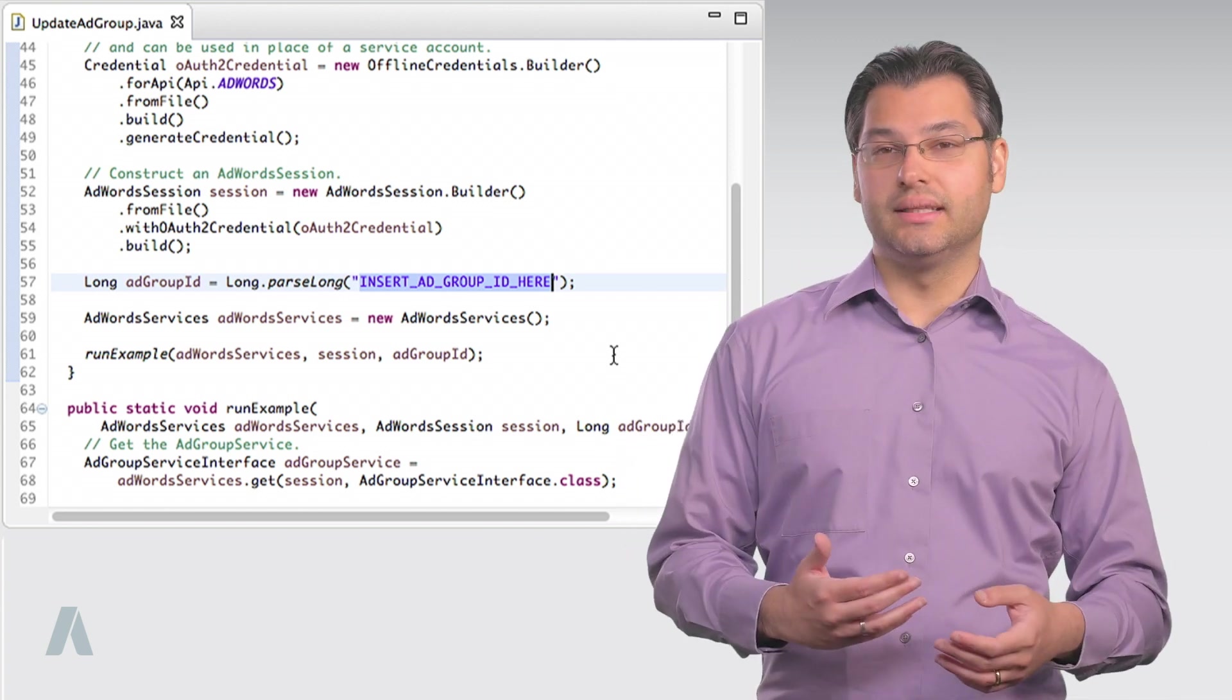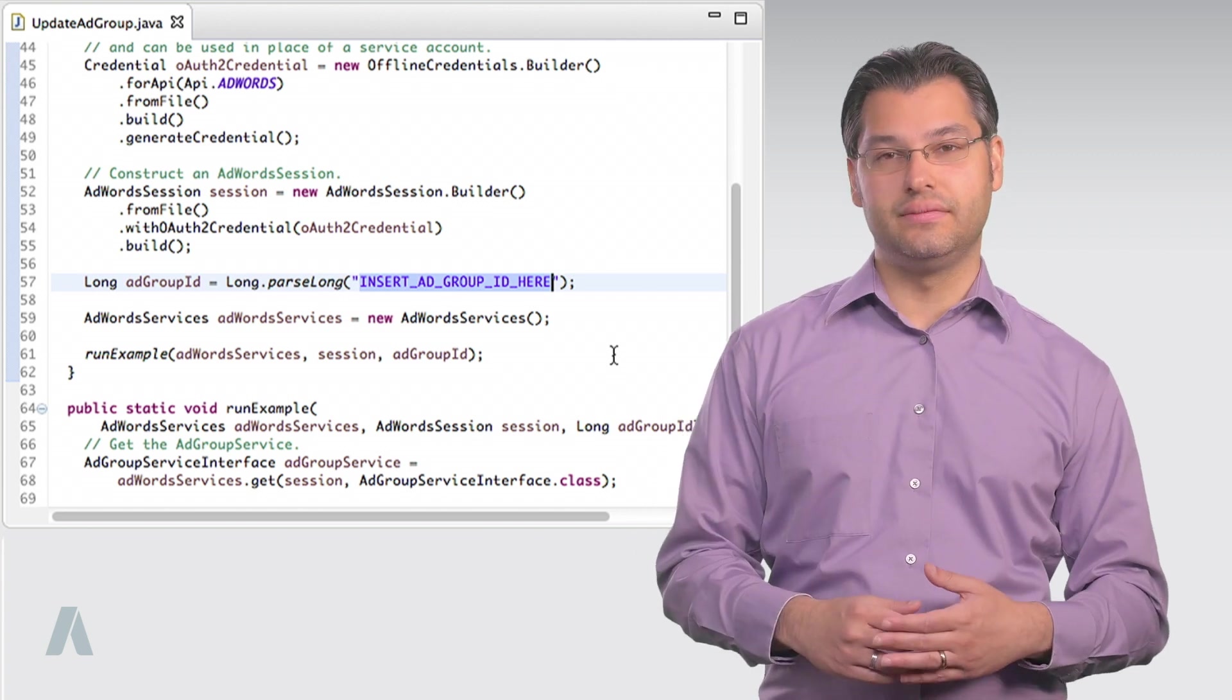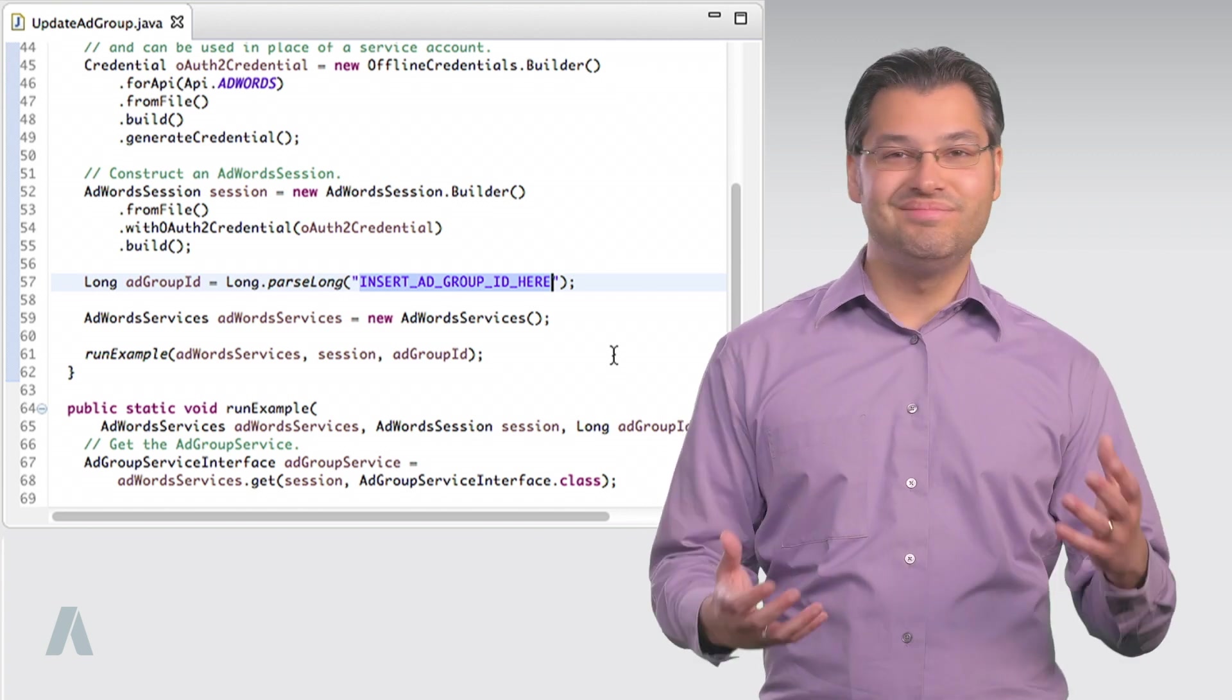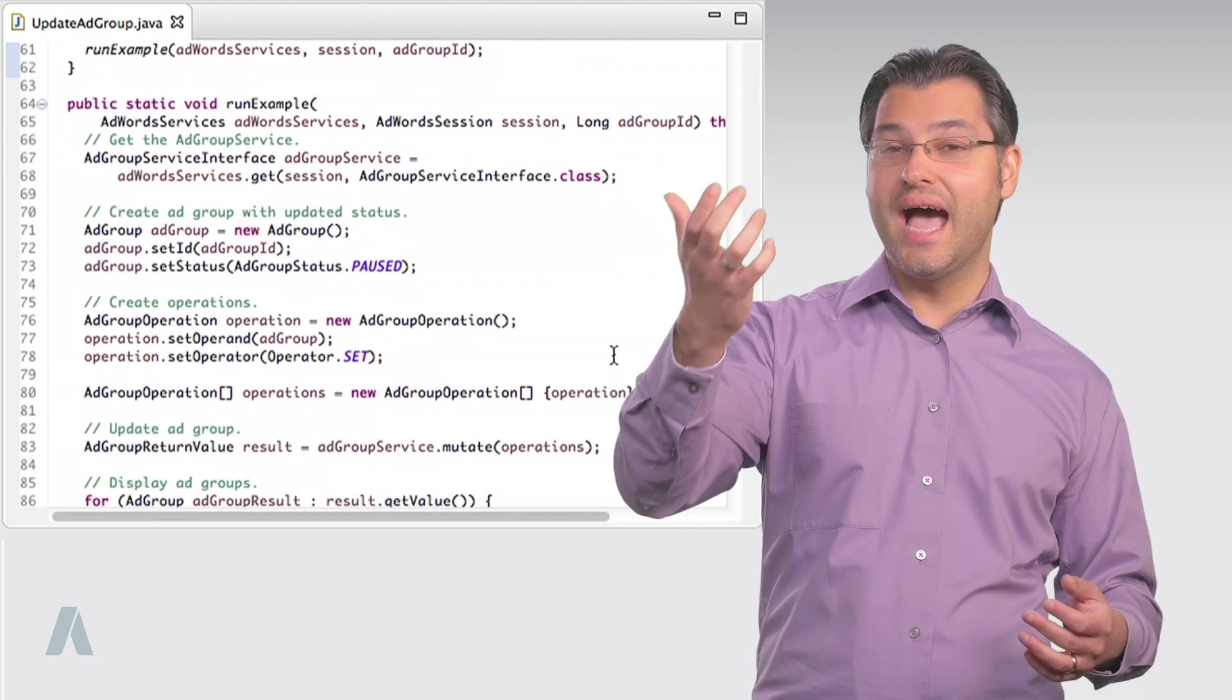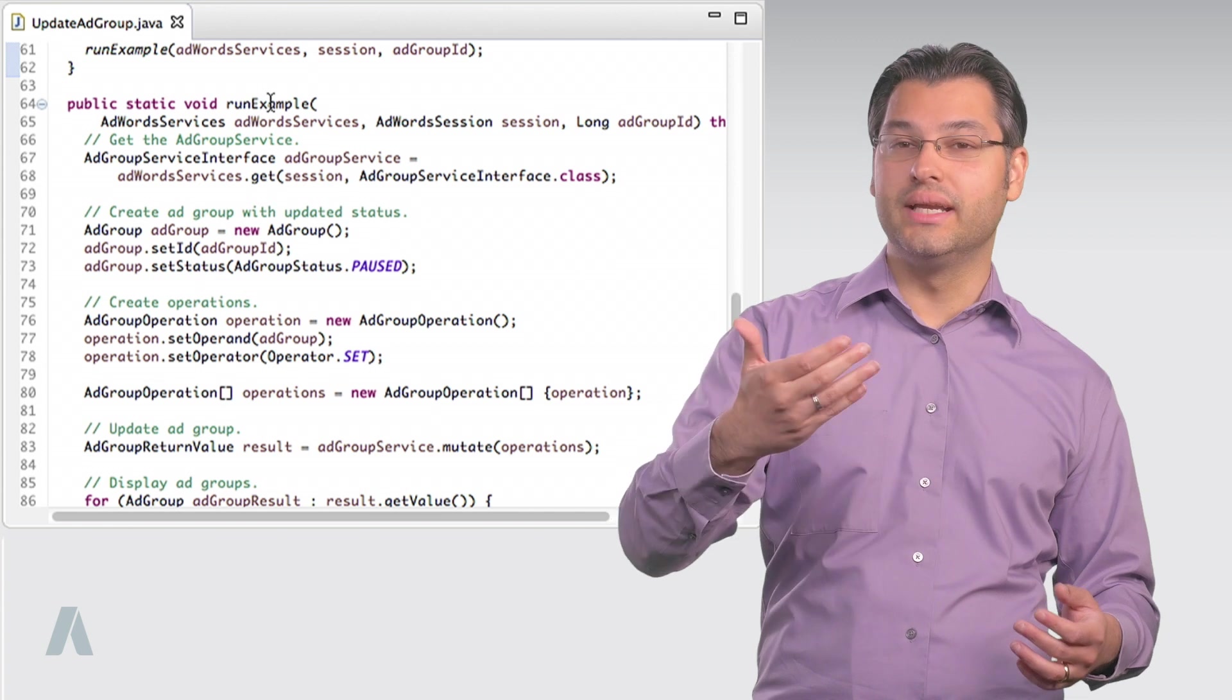Well, you could get it programmatically through the get method of the ad group service interface. One unofficial trick that I use for testing is to grab the ID from the URL of the AdWords web interface when viewing an ad group.